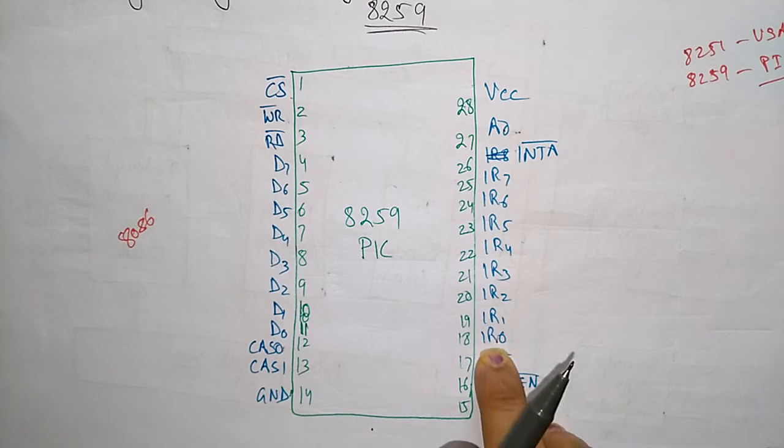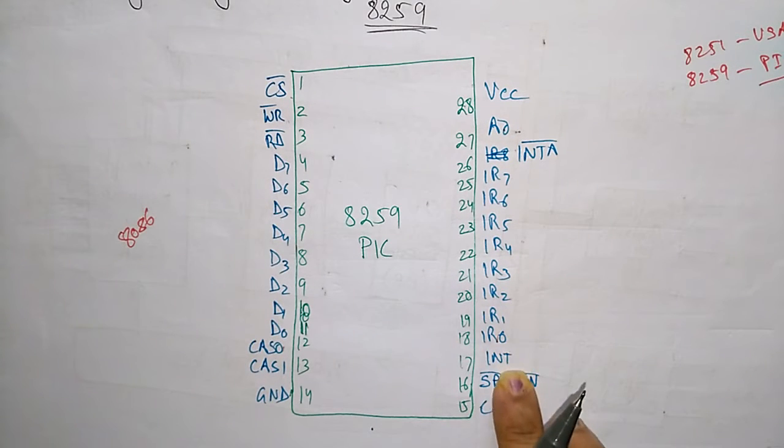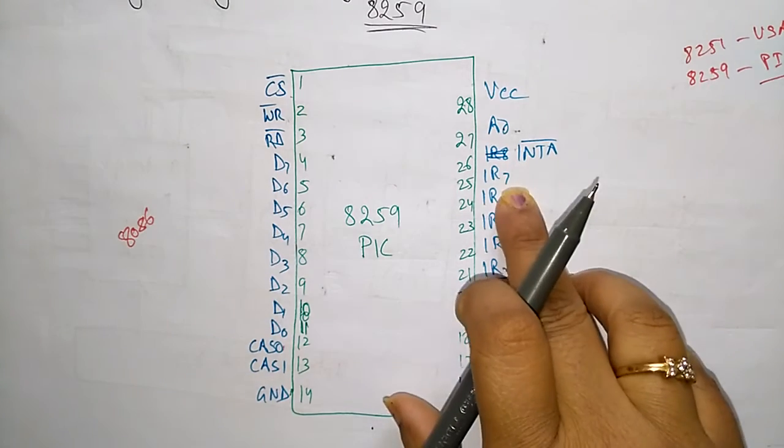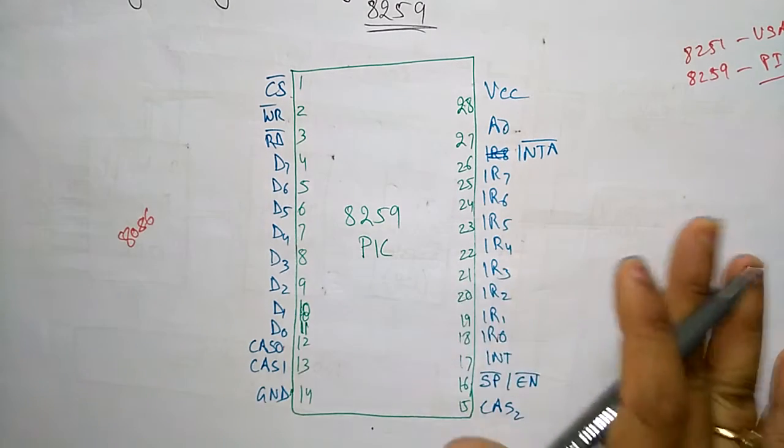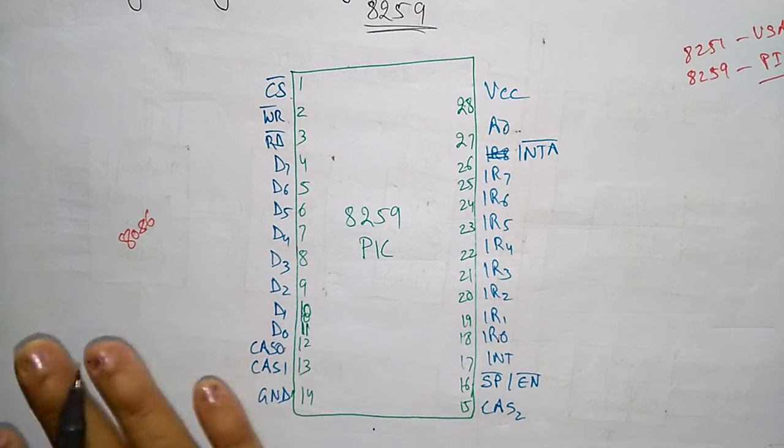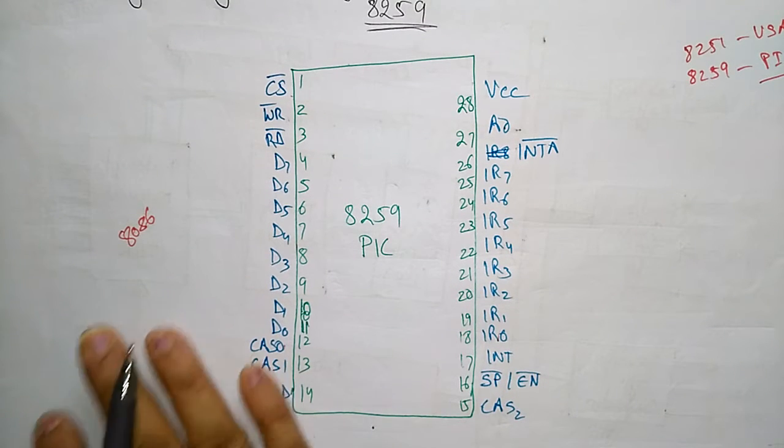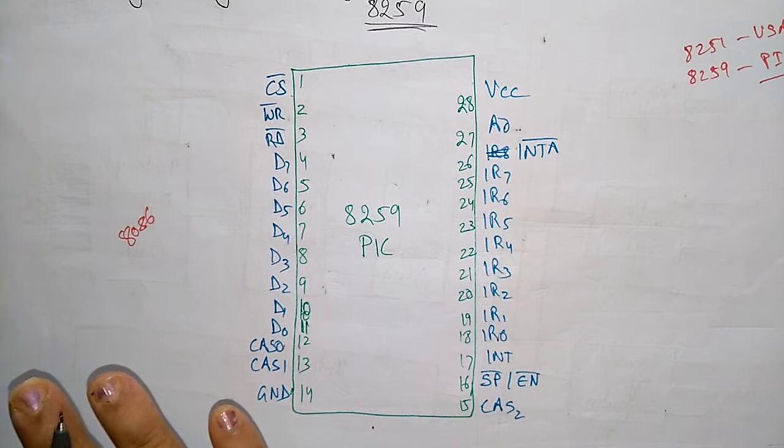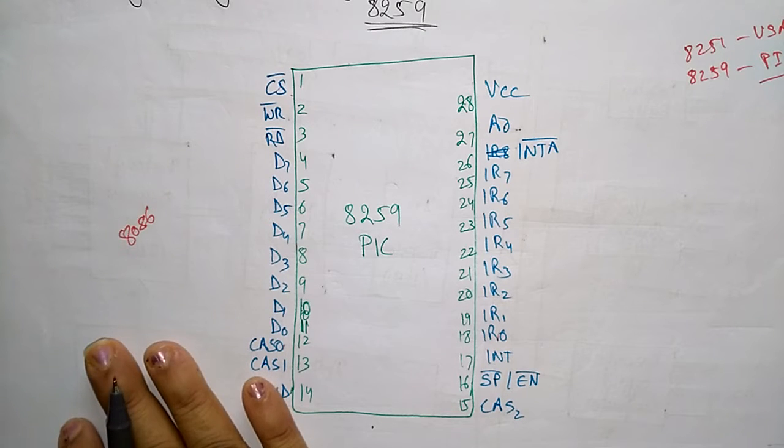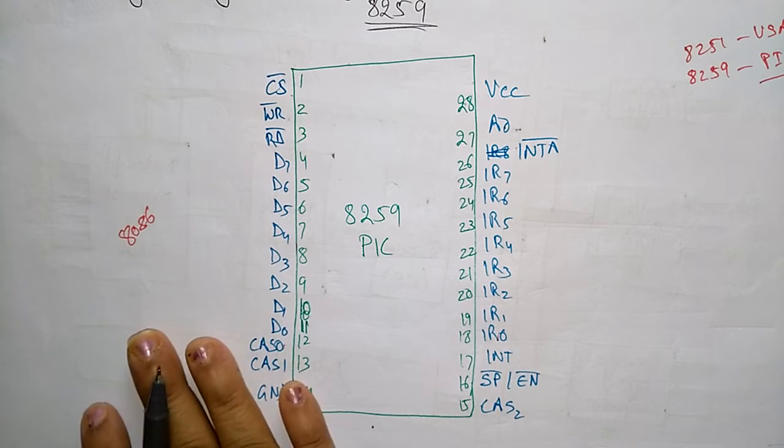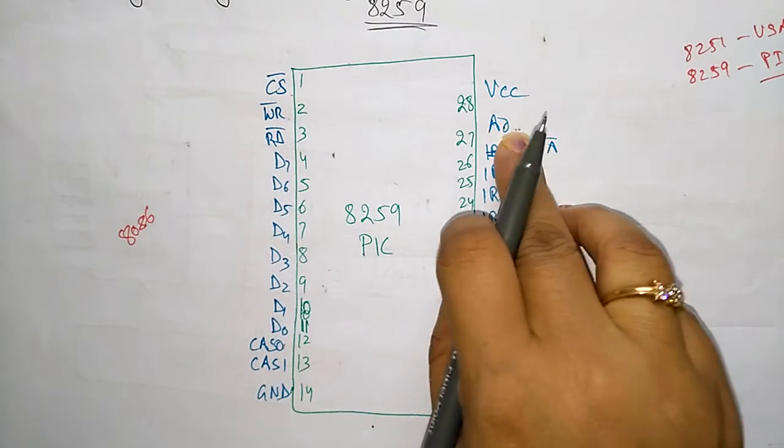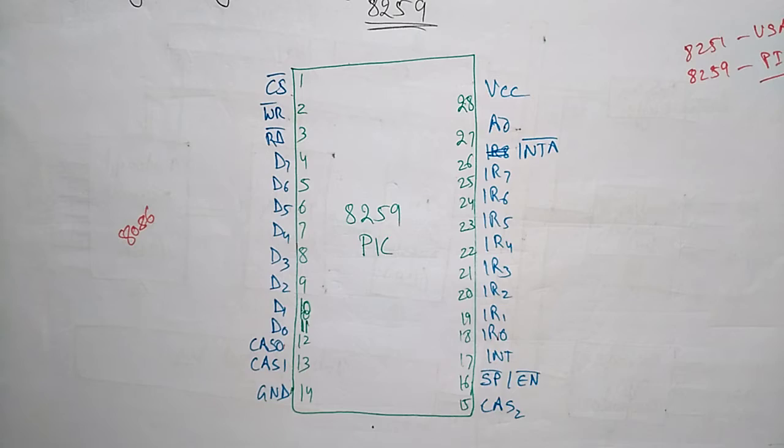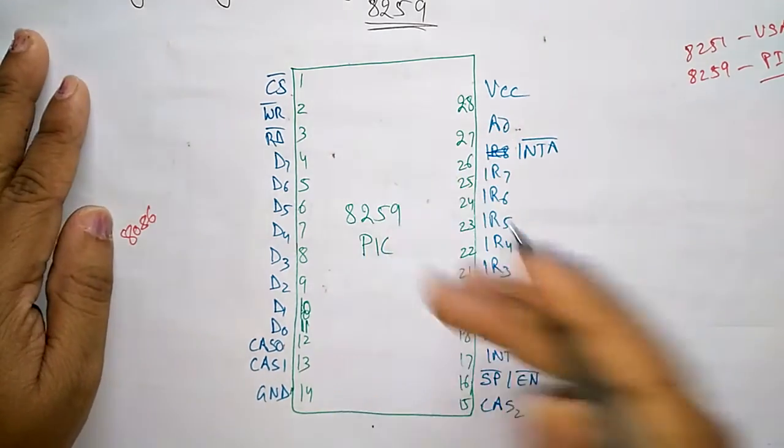Total eight interrupt requests are there: interrupt IR0 to IR7, which are given by the external devices. The request is given by the external devices and those requests will be sent to the processor. According to the priority, based on the priority, the processor will take the interrupt request and perform the operations. Again, it sends the interrupt acknowledgment to the 8259.